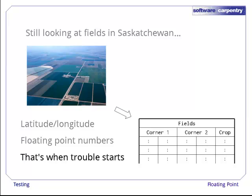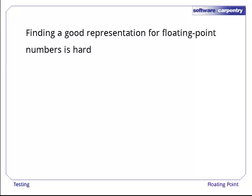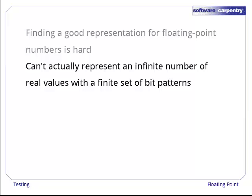To understand, we have to step back and look at how computers store numbers. Finding a good representation for floating-point numbers is hard. The root of the problem is that we cannot represent an infinite number of real values with a finite set of bit patterns. And unlike integers, no matter what values we do represent, there will be an infinite number of values between each of them that we can't.